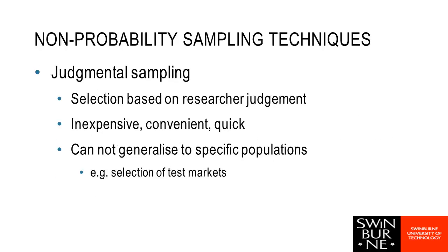Our second method is judgment sampling. It's still non-random and has still got potential for bias — basically the researcher is using some sort of judgment to pick people. It could be tied in with convenience sampling, but they're trying to apply a little more judgment, perhaps selecting people for specific reasons. You won't be able to generalise to populations, but it can be quite useful — for example, if I was doing a pilot study and wanting to test my survey instrument, I would intentionally pick particular kinds of people to test it on.